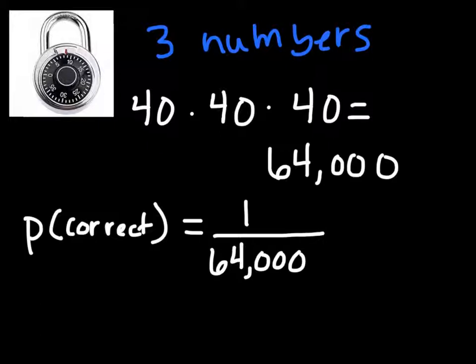So your odds are not looking very good. The probability that you choose the correct combination is one in 64,000. Sorry, that's pretty close to zero and impossible.